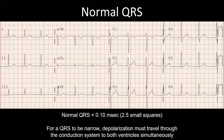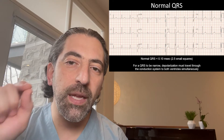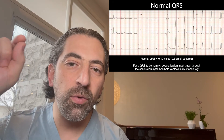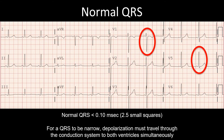This is an example of a normal QRS. For the QRS to be narrow, depolarization must be coming from the AV node through the His-Purkinje system through both the right bundle and the left bundle, leading to simultaneous depolarization of the right ventricle and left ventricle at the same time. This produces a narrow QRS complex with a small R and deep S in lead V1 and a large R and small S in lead V6.